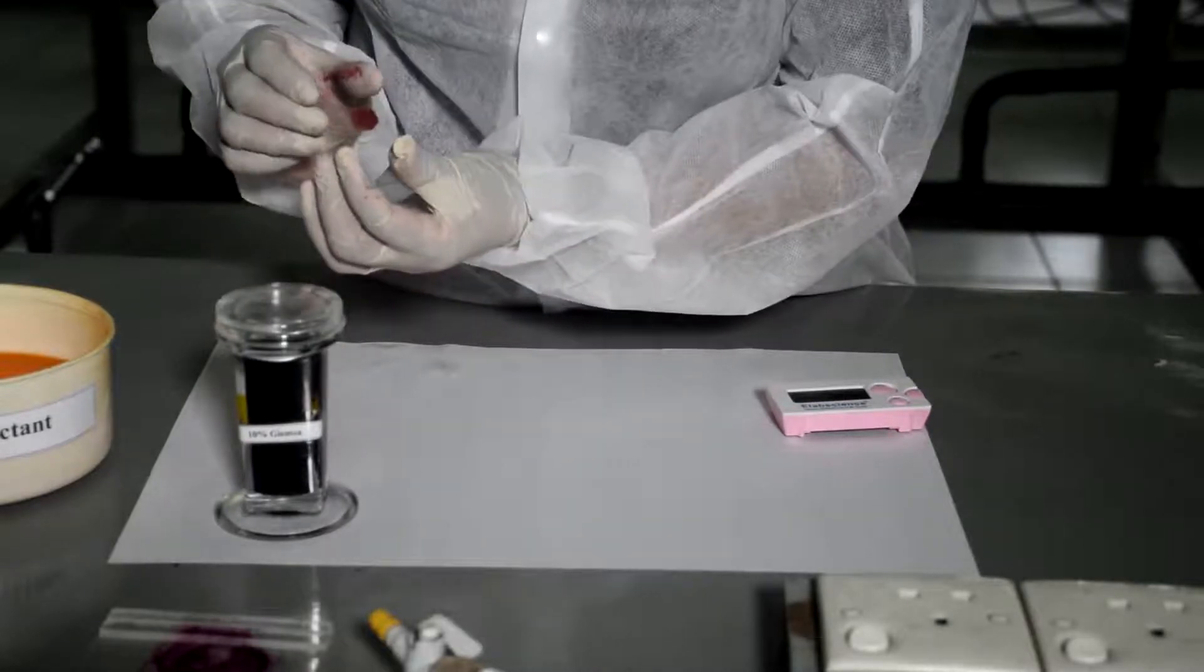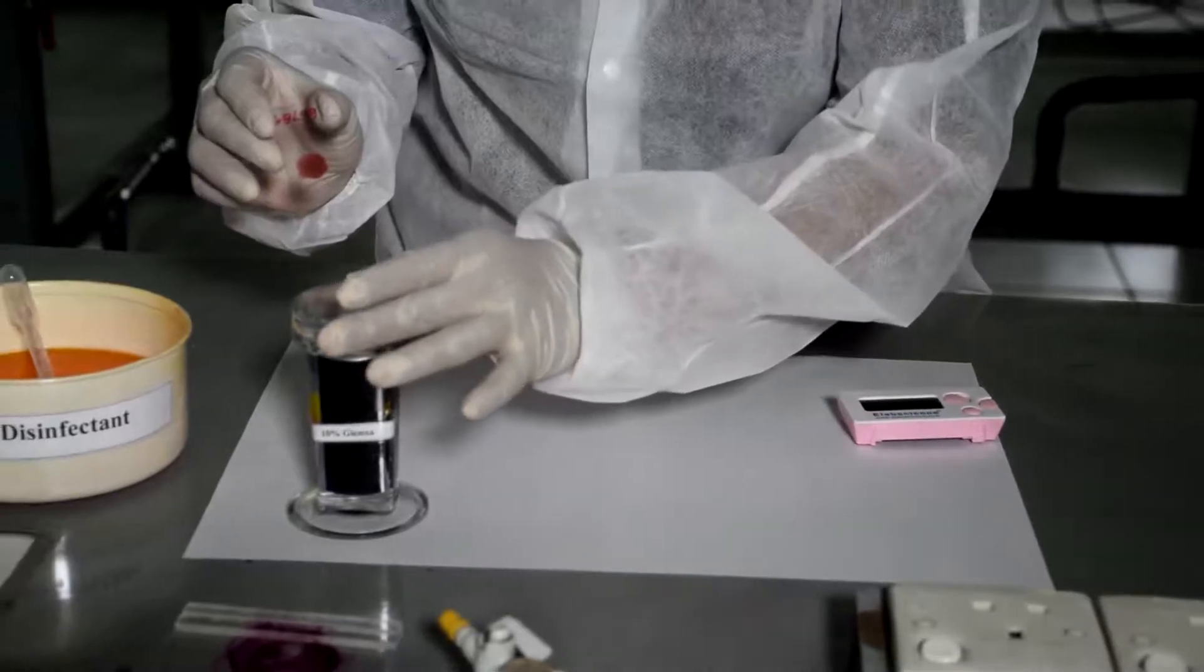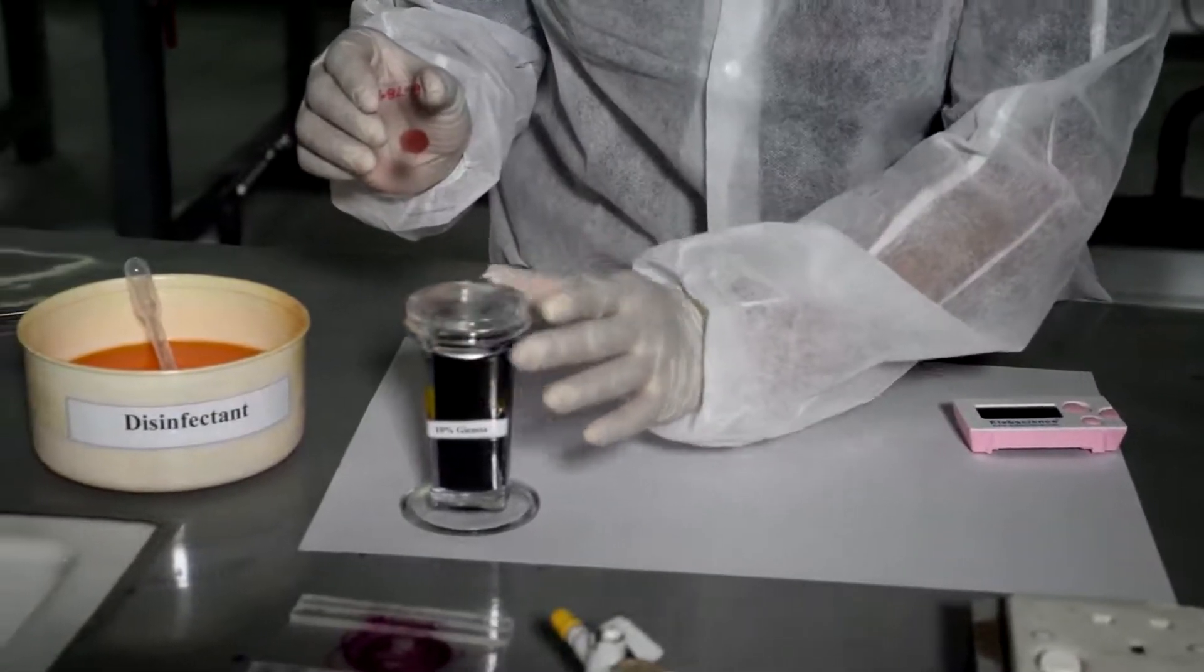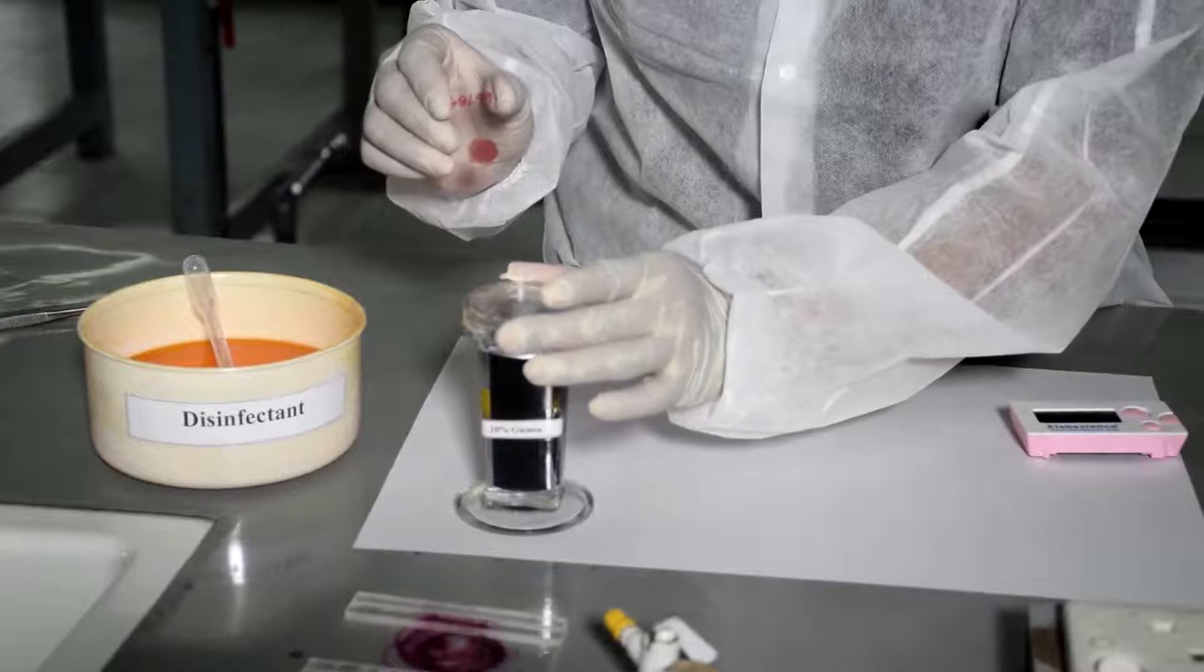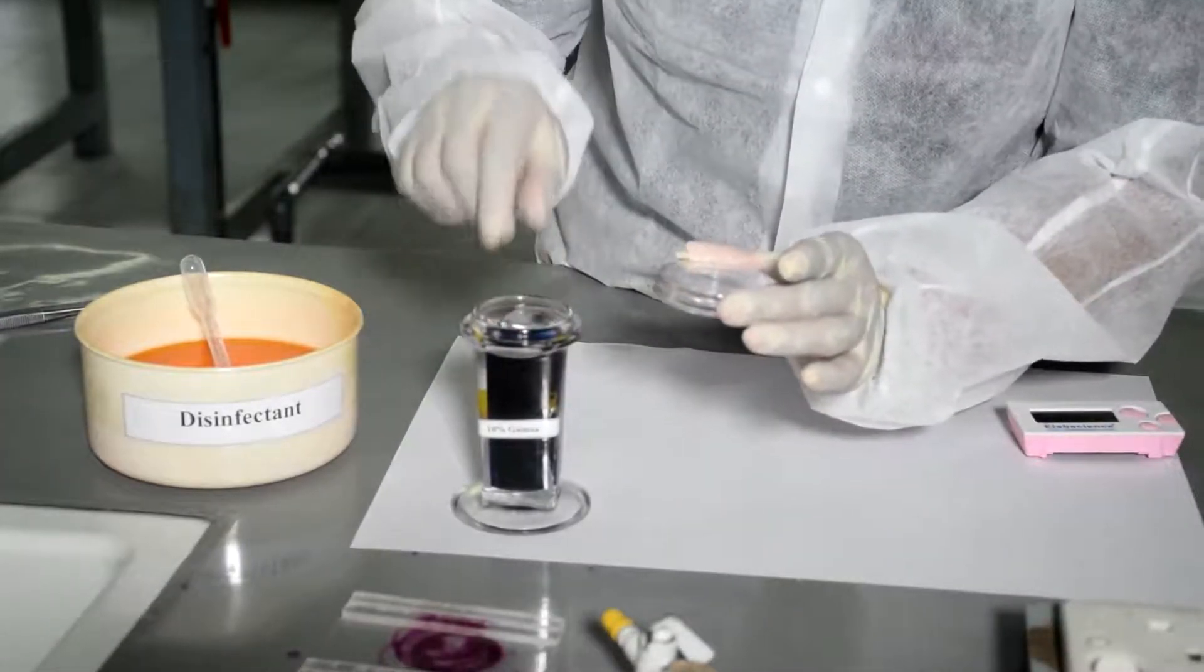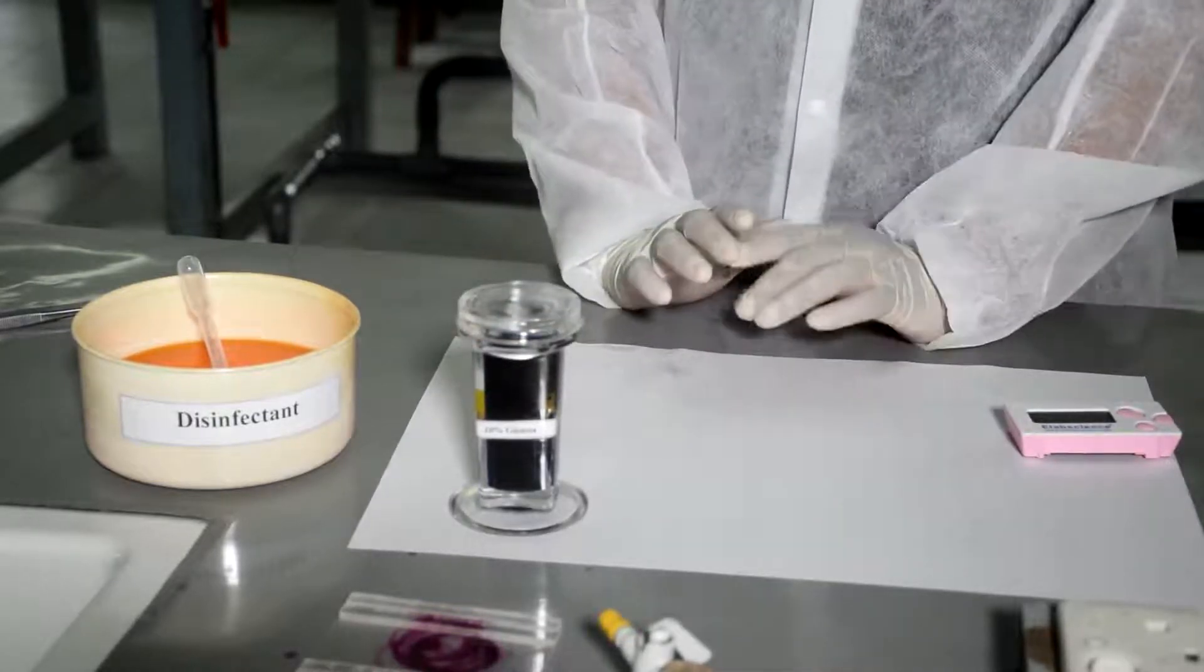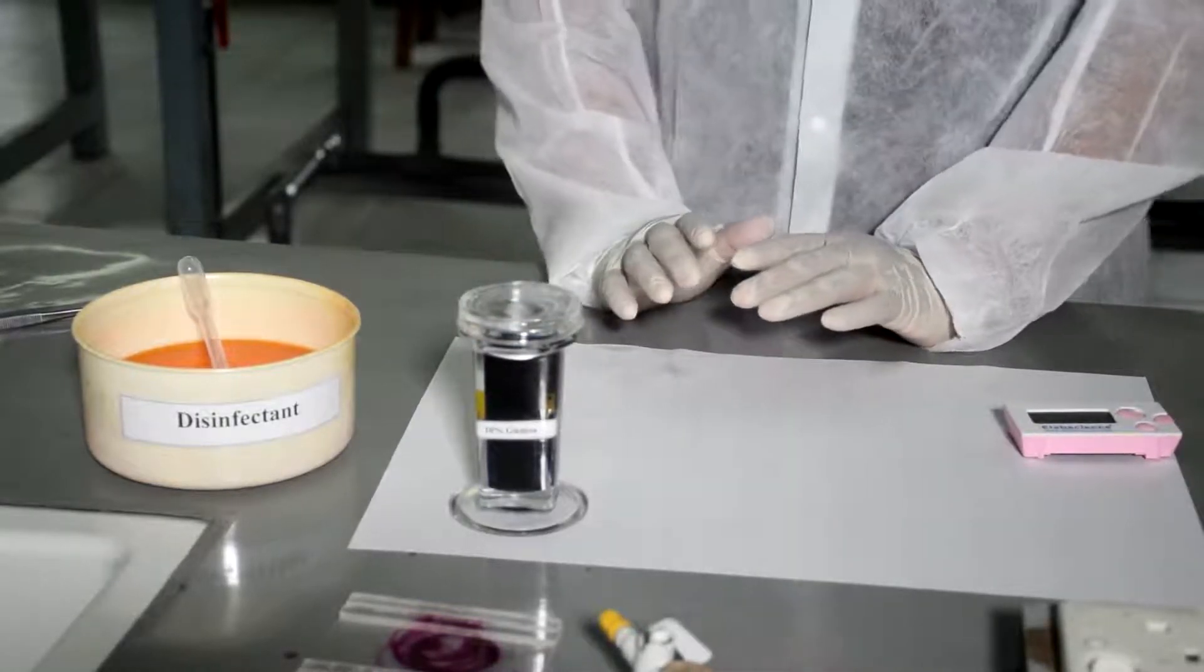First step is to pour stain gently onto the slide until the smear is covered. Alternatively, we can dip in a staining jar containing 10% Giemsa. And then we allow the stain for 10 minutes.